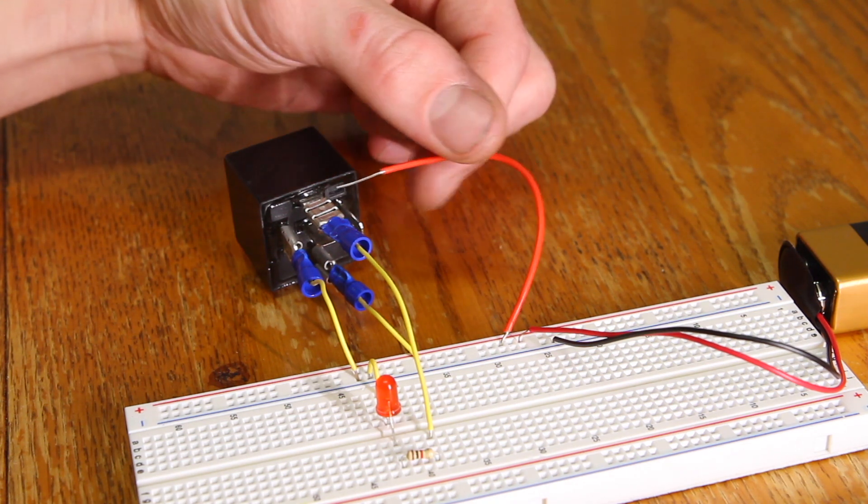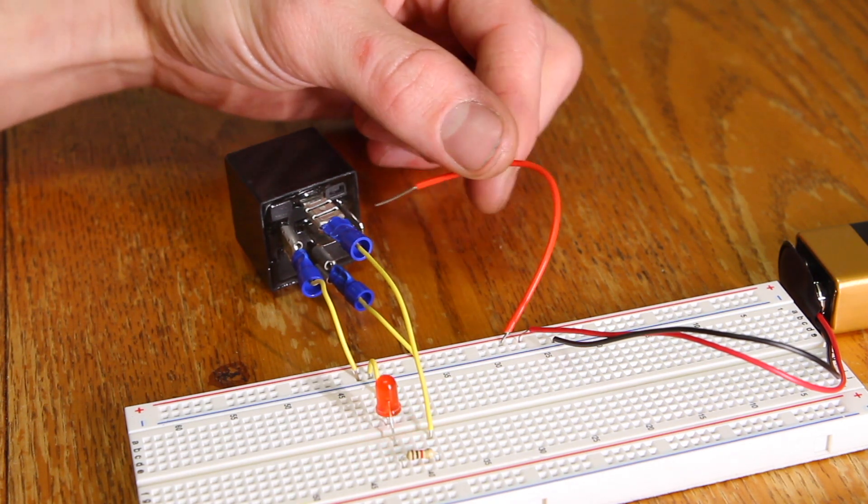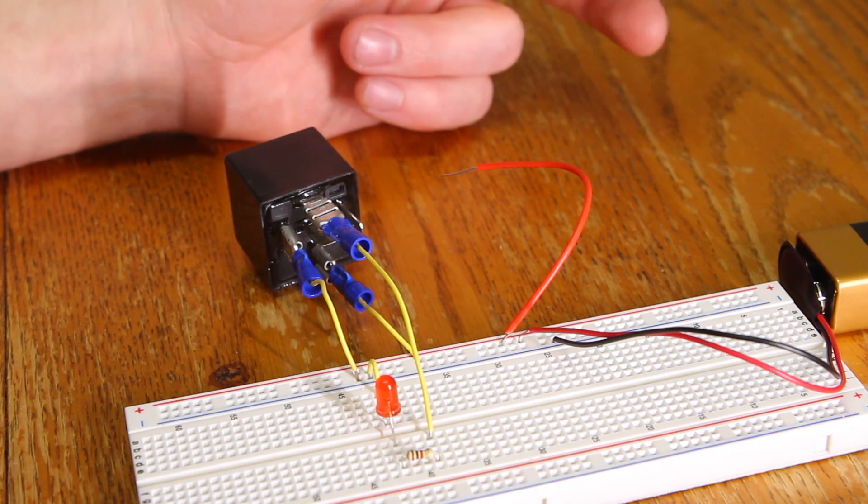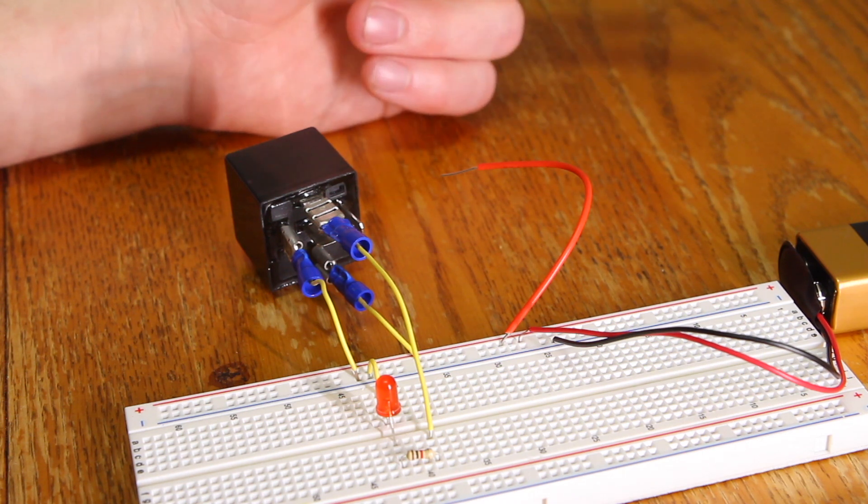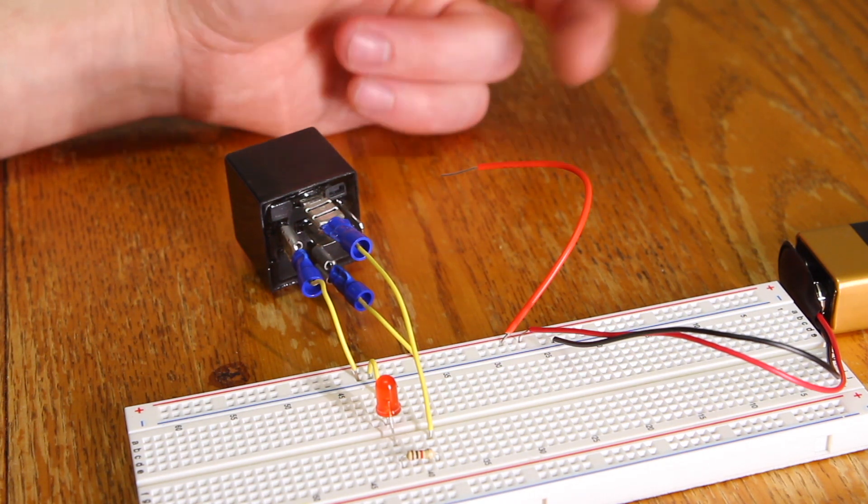If you were to hook up the trigger side of the relay to just a manual switch you could easily forget and leave the switch on and keep your heated grips or phone charger powered even while the bike's off and you've walked away from it.